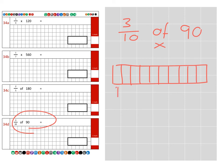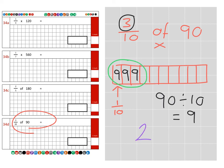Each of these parts is worth one tenth. So we know that 90 divided by 10 gives us 9, so each of these are worth 9. So if I need three of these tenths, I know that these three tenths here have a total of 27.